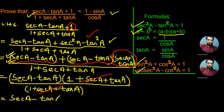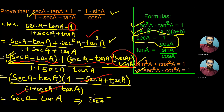Once again going through the trigonometric formulas, we can express sec a in terms of cos a as sec a equals 1 upon cos a. Similarly, we can write tan a in terms of sine and cos as sin a by cos a.